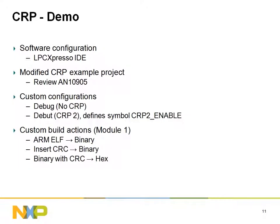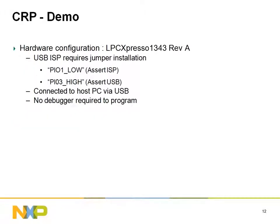I will now quickly demonstrate how you might use CRP in a project. I'll be using LPC Expresso as my IDE, and I will target the LPC Expresso 1343 Evaluation PCB. For this demo, I've made some minor modifications to the CRP project included with LPC Expresso. These changes are mostly superficial, but they'll allow me to more easily illustrate a side-by-side comparison of binaries that enable or disable CRP. They do not affect how CRP is used in practice. I'll be making use of the LPC 1343's USB mode of in-system programming.